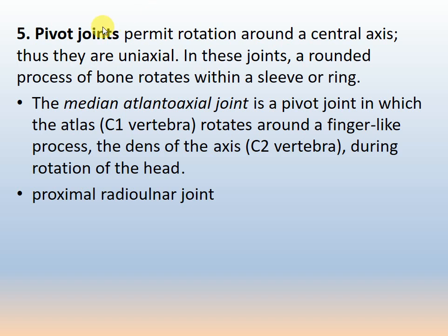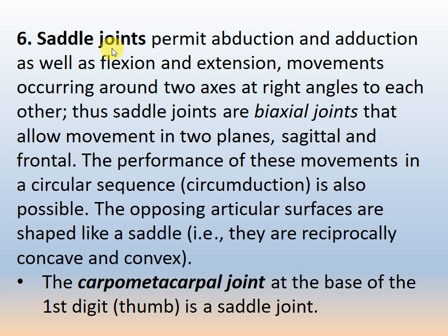The pivot joint permits rotation around a central axis — thus they are uniaxial. In these joints, a rounded process of bone rotates within a sleeve or ring. A common example is the atlantoaxial joint: the atlas is the first cervical vertebra (C1) and the axis is the second (C2). The joint between C1 and C2 is the pivot joint. Also, the proximal radioulnar joint is an example of a pivot joint allowing rotational movement around the medial axis.